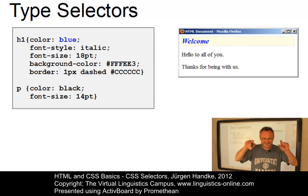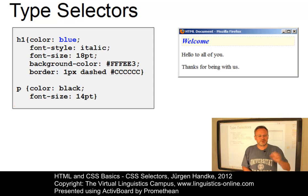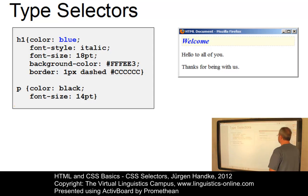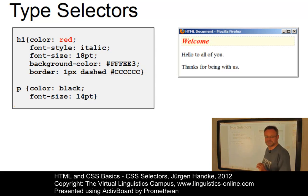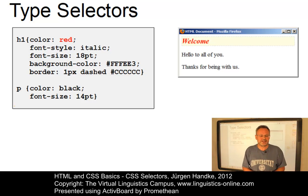Type or element selectors redefine the way an HTML tag is displayed by a browser. Our current stylesheet contains two type selectors: H1 and P. Let us change one of them and define the heading now in red. A simple redeclaration of the color property of the H1 selector in the stylesheet will do the job.